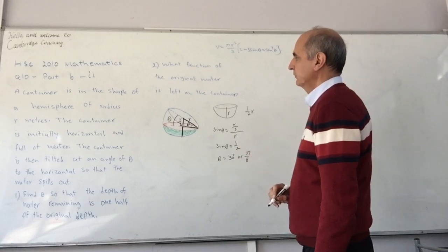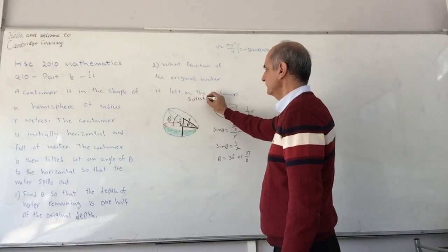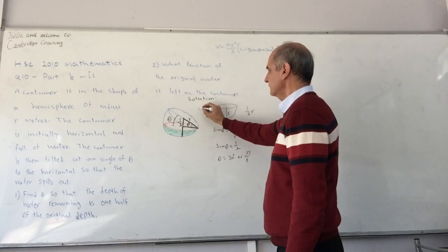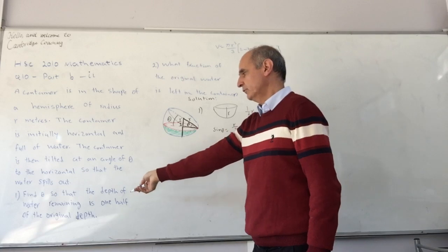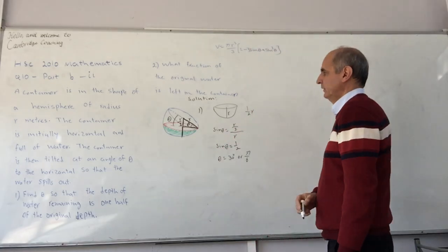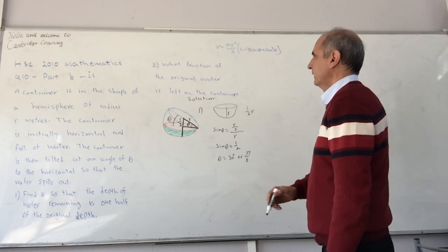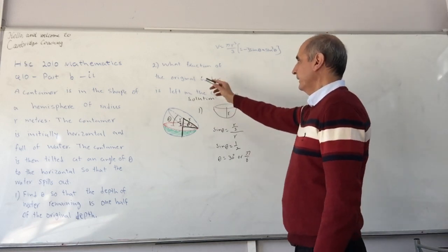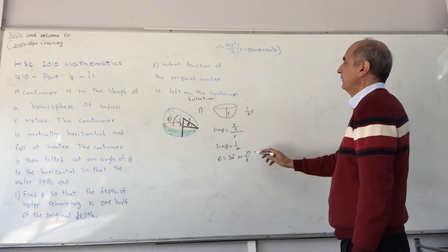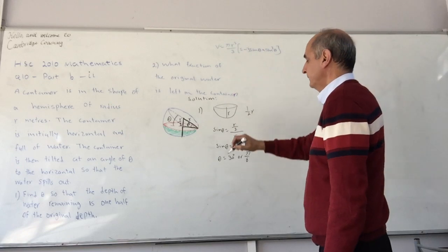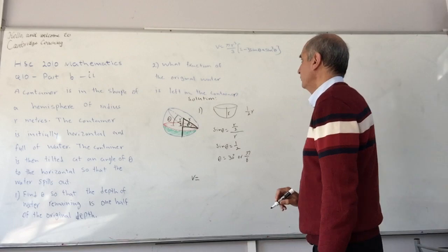That is for part 1. Question 1, find theta so that the depth of the water remaining is half of the original depth. And 2, they are saying what fraction of the original water is left in the container. Now we know the value of theta, we can solve it here, and we can see how much volume we have.